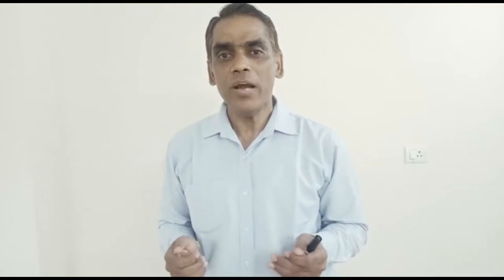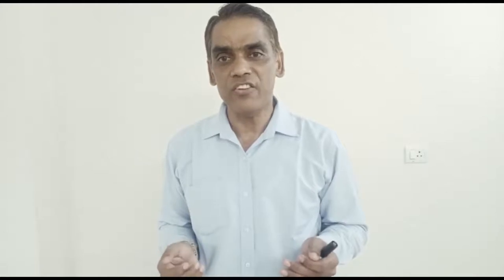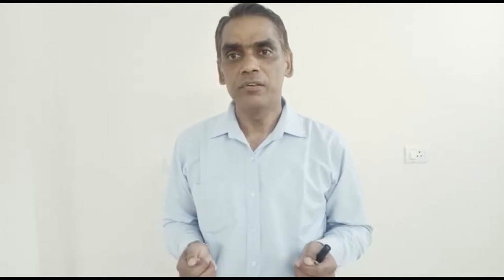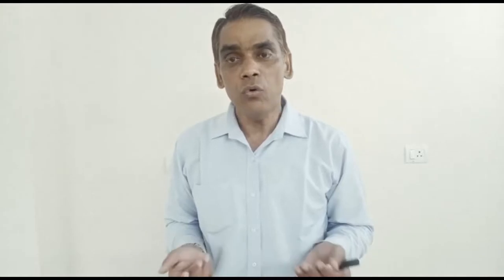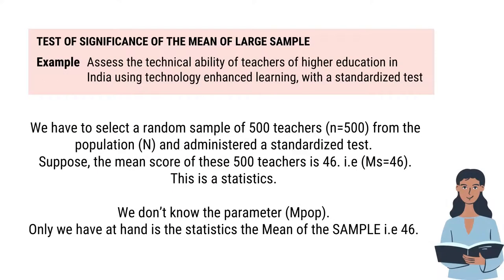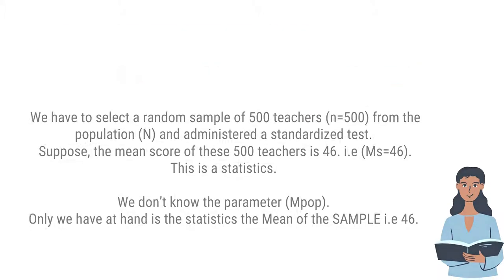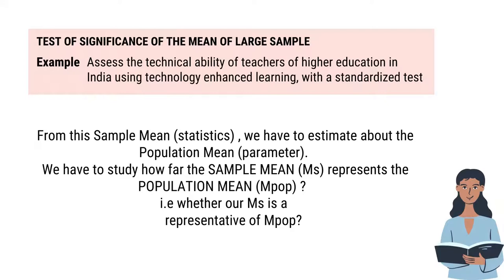It is quite impossible and impractical, because teachers are quite numerous and spread all across the country. So, we have to select a sample of 500 teachers. Suppose the mean score of those 500 teachers is 46. This is a statistic. We do not know the parameter — only the statistic is at our hand.